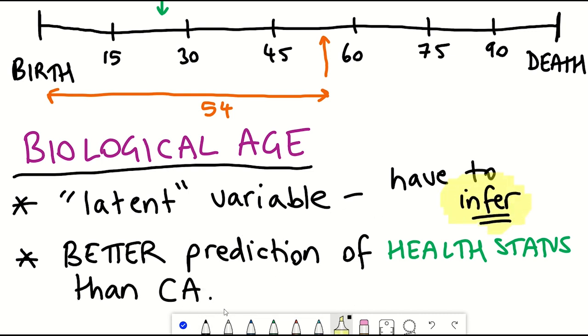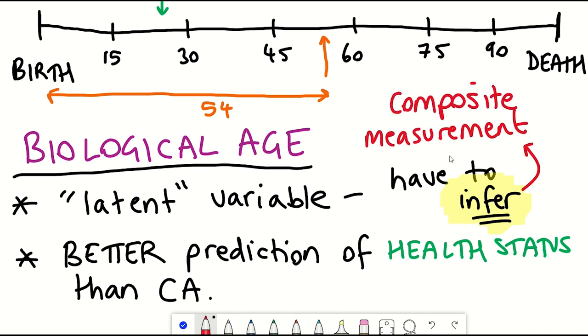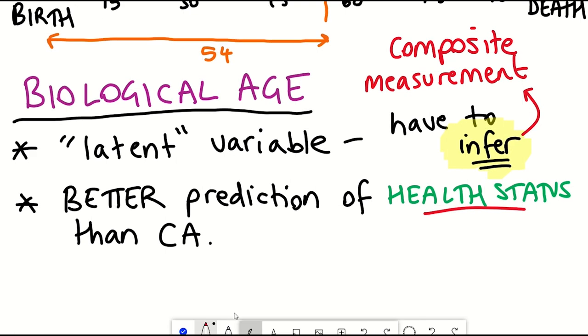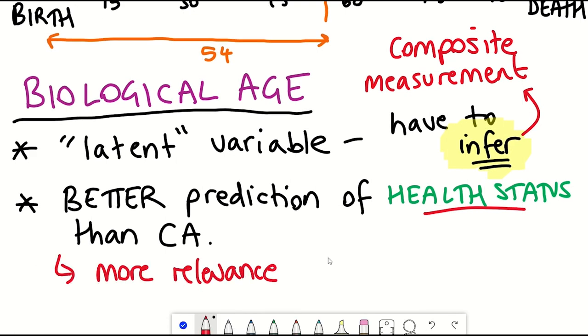But the idea is that it provides a better prediction of your health status than chronological age. So biological age can be thought of as a composite measurement that correlates with various health outcomes but for these reasons could have more relevance for disease prediction, diagnostics and treatment outcomes than just knowing how old someone is.